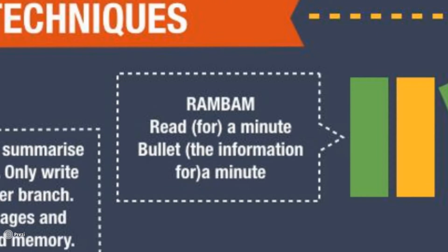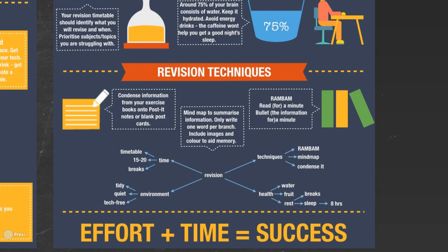One technique is to read really intensely for a minute, then make bullet-pointed information from it — varying the activity and changing it around. Ultimately what we're looking at is putting in effort and time to lead to success. There are obviously hundreds of elements you could bring in, and it's about building a strategy — especially for Year 7, Year 8, Year 9 — so they can be successful as they move through.